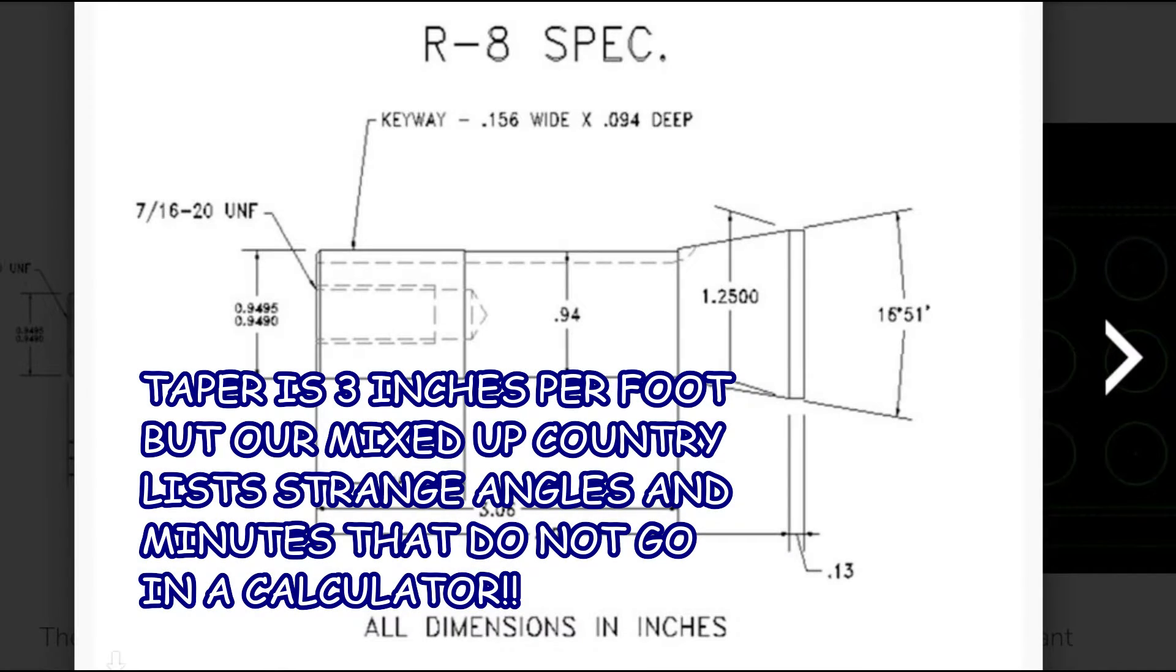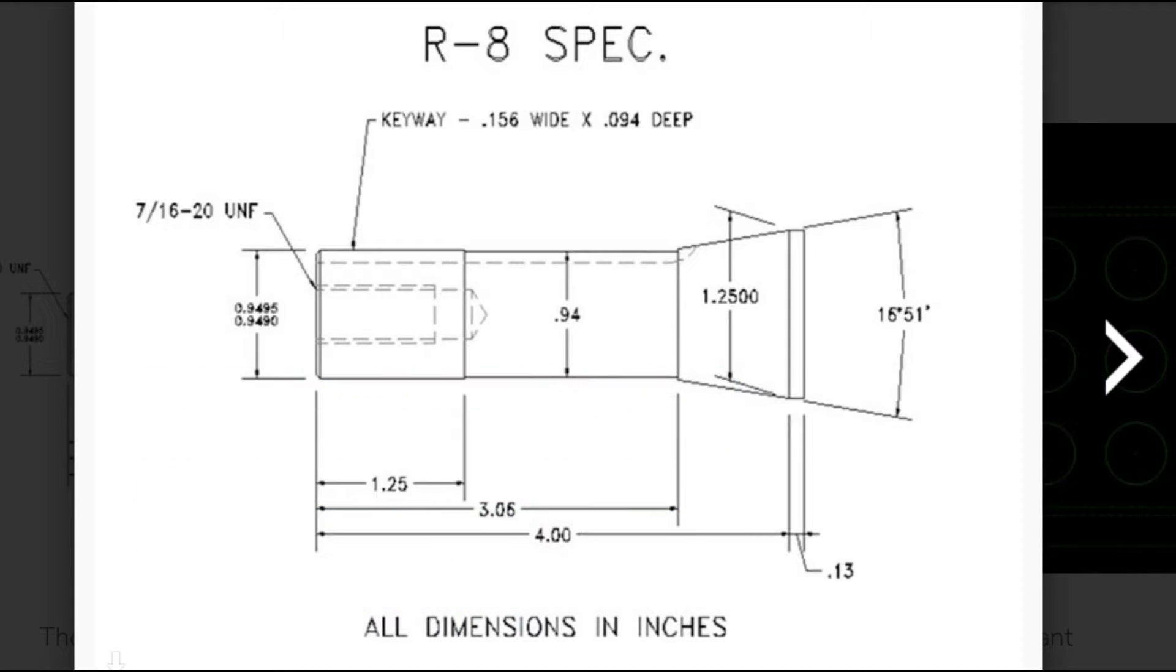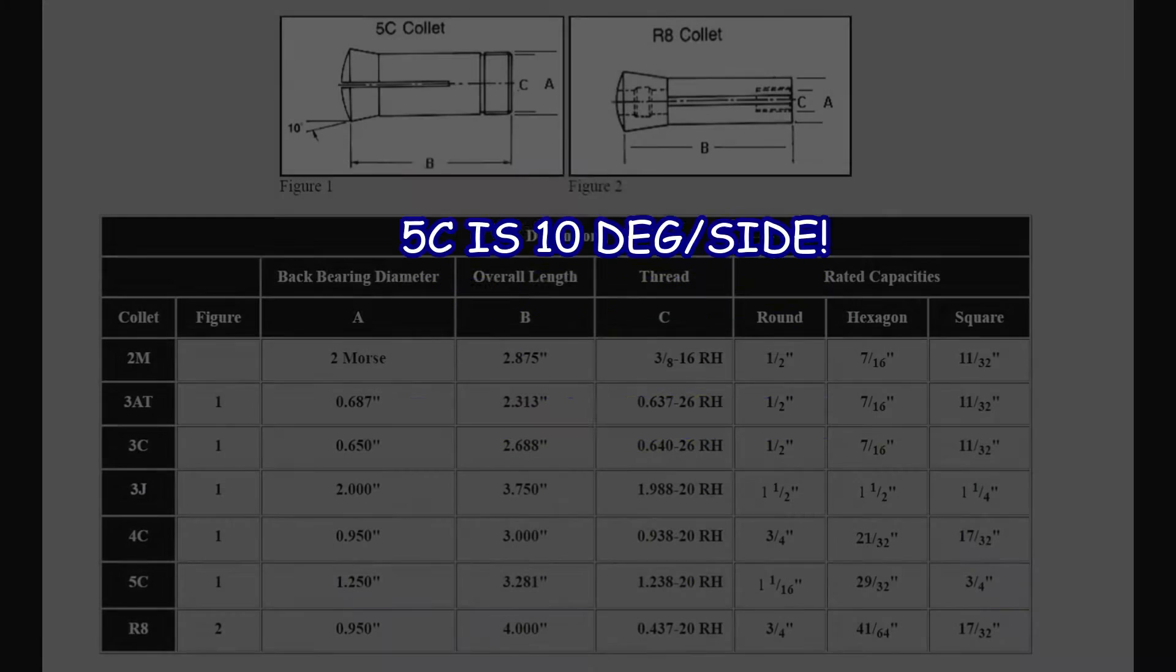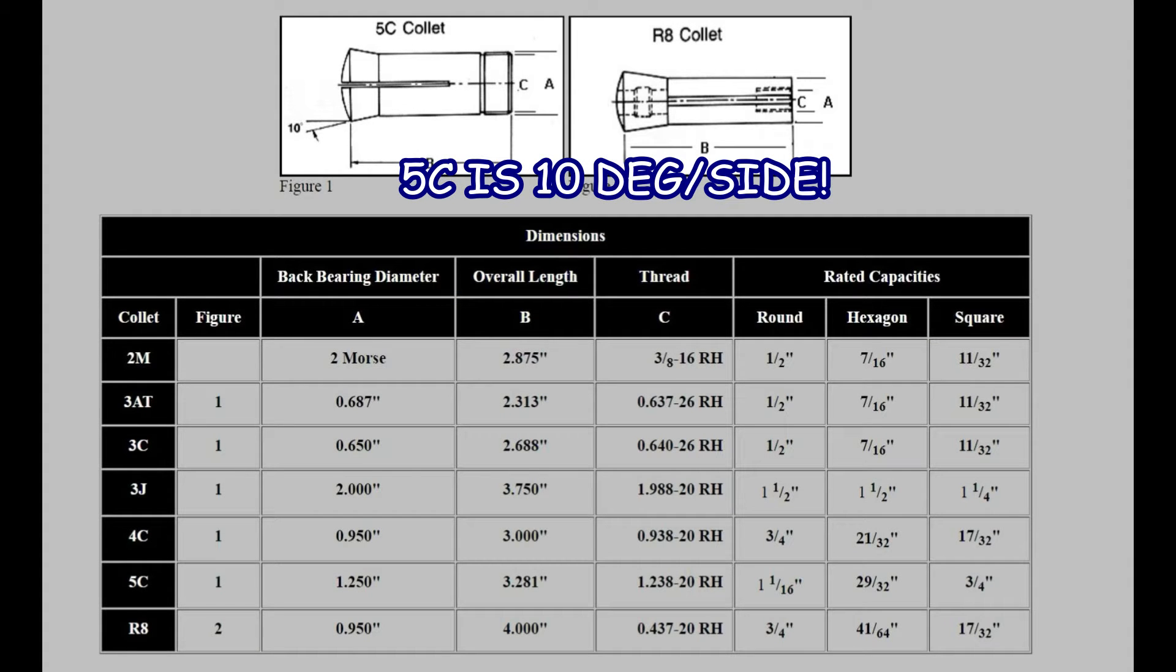Three inches per foot, which is what you use. But instead they put 16.51 to confuse everyone. 16 degrees, 51 minutes that you can't enter into a calculator. I mean, the country's in disarray. 5C collets are 10 degrees per side. They are their own collet.